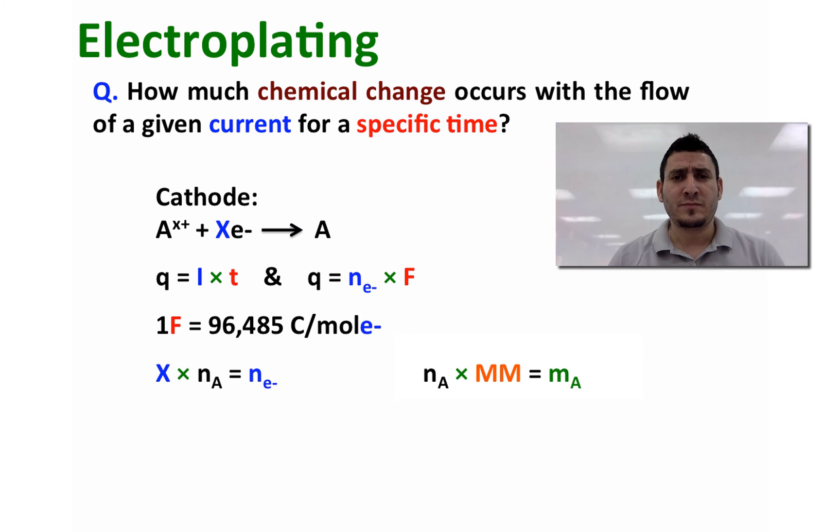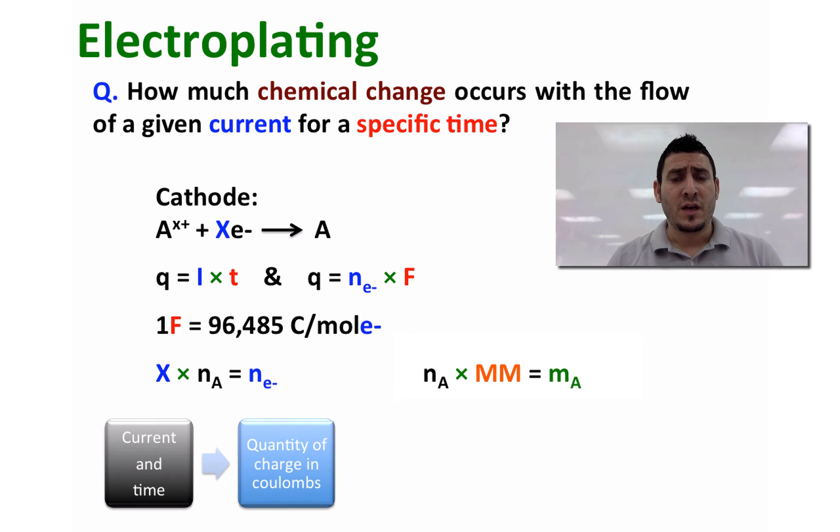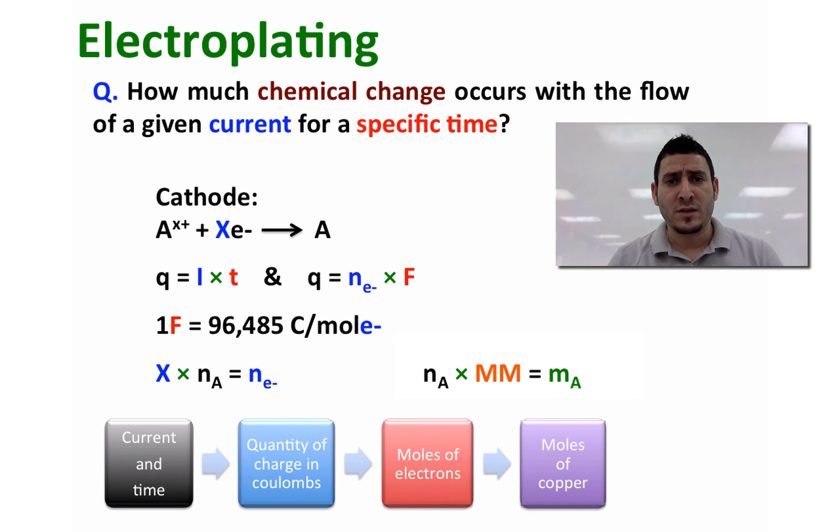So let's review this. If we have current and time, we can calculate the amount of charge applied. From the amount of charge applied, which is in coulombs, we can determine the moles of electrons that passed through the cell. From the number of moles of electrons, we can determine the number of moles of copper. And from the number of moles of copper, by multiplying it by the molar mass, we can determine the grams of copper that was plated on the ring.